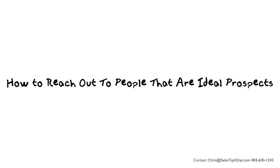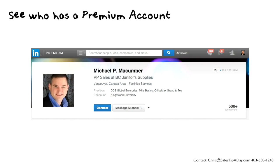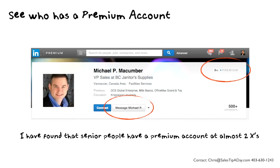Now that you've set up LinkedIn alerts to find ideal prospects, you have to figure out a way to reach out to them. The first and one of the quickest ways, if you're not connected with these individuals, is to find out anyone that has a premium account and see if you can direct message them. I found that senior level people have a premium account at almost twice the rate of junior level people — vice presidents and directors in Calgary had premium accounts at twice the rate of regular sales reps.